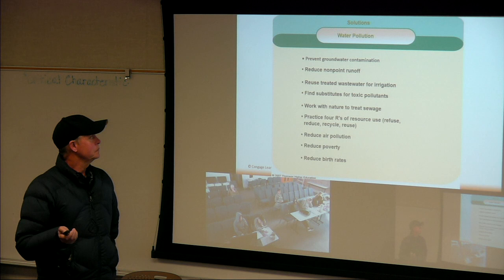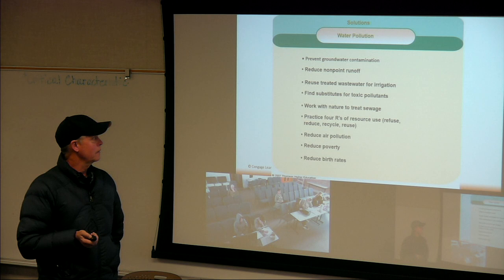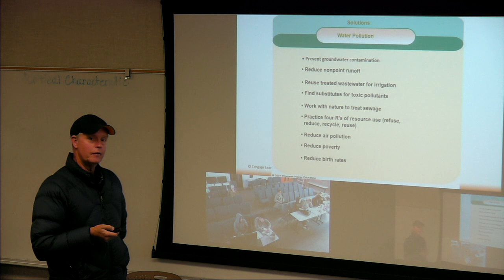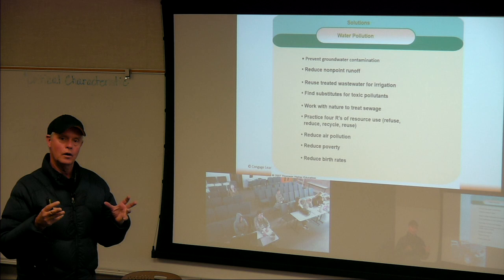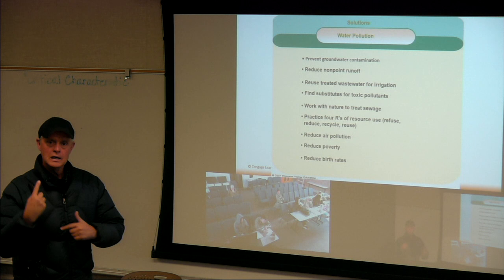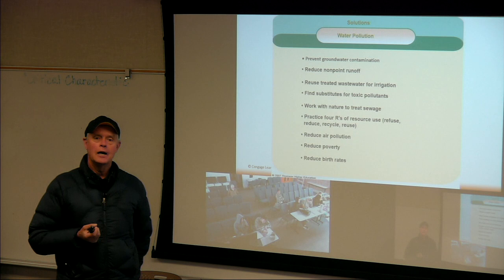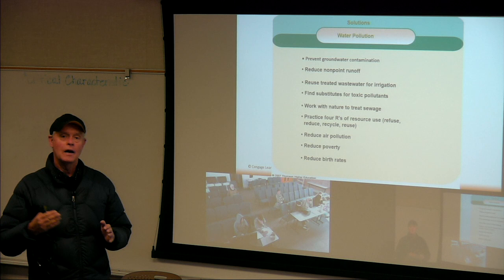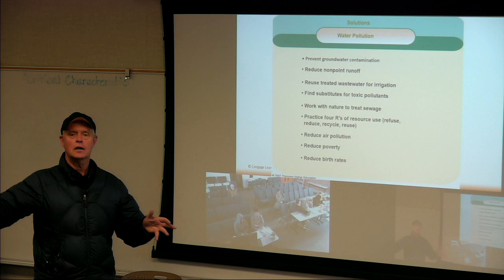Water pollution solutions: prevent groundwater contamination, reduce non-point runoff, reuse treated wastewater for irrigation. Locally, we now have two water treatment plants — one in Apple Valley near Oto Park and one in Hesperia — pre-treating water to the secondary level before it goes to Victor Valley Wastewater Treatment Plant, then putting it back out on golf courses and lawns. We're recycling it. Many people in Apple Valley have gray water — water that's not directly polluted from your toilet. I have a gray water system: my toilet is separated from the showers and sinks, and that water goes out on the plants.